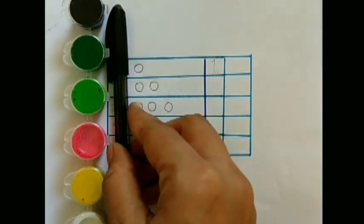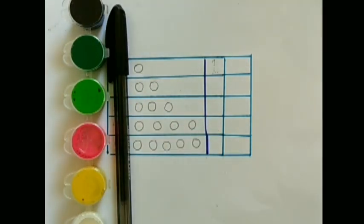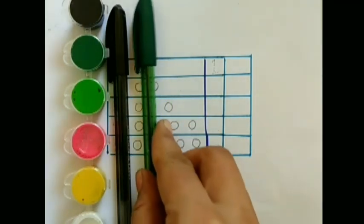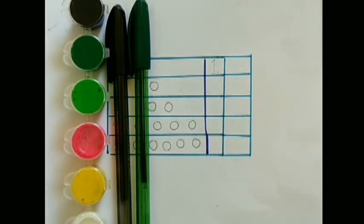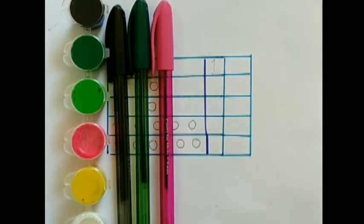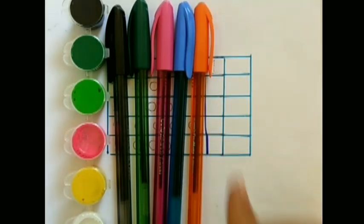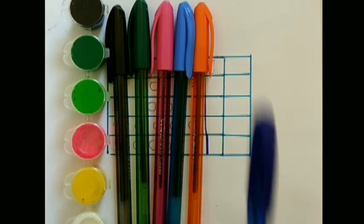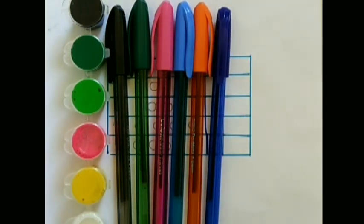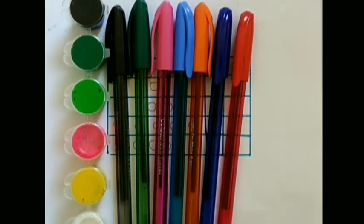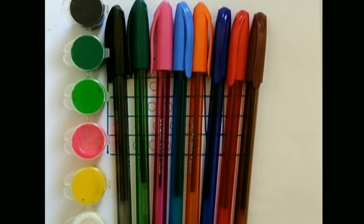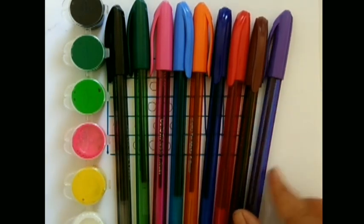Let's learn some colors named Black Color, Dark Green Color, Pink Color, Sky Blue Color, Orange Color, Blue Color, Red Color, Brown Color, Purple Color.